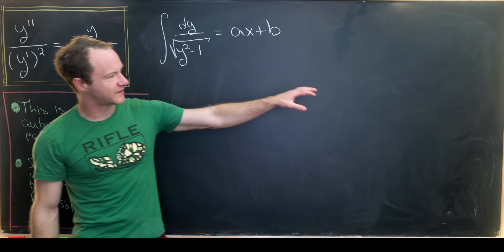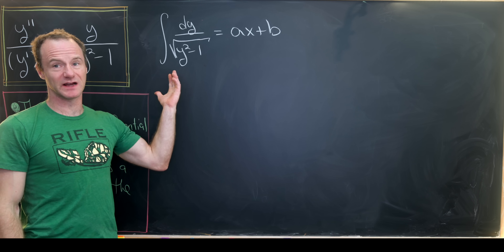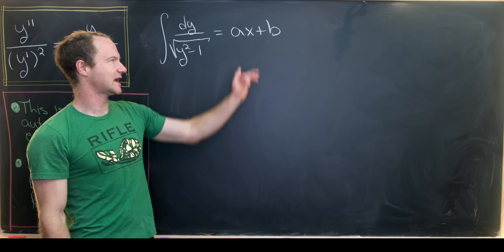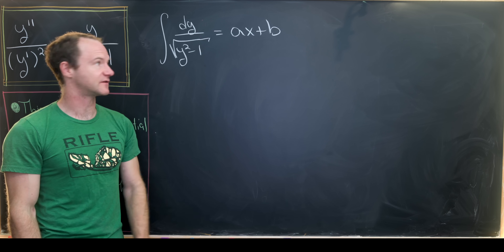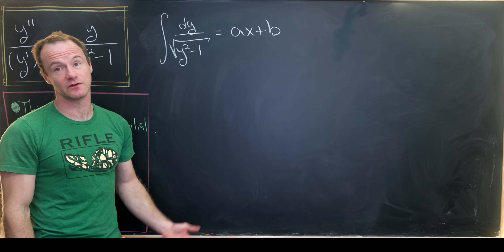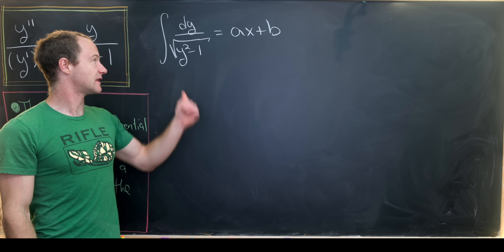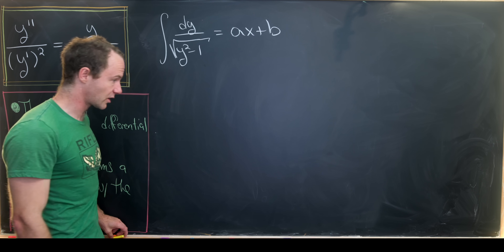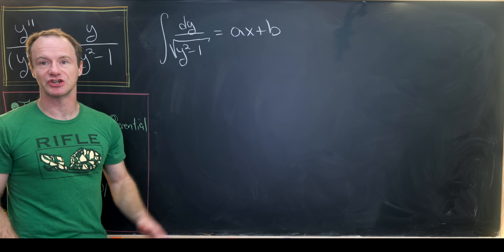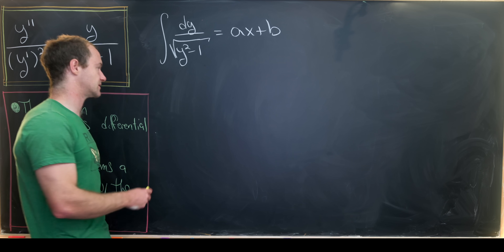I took where we finished on the last board and brought it over here, and I also took the antiderivative of both sides. The right-hand side was just a linear function, so taking the antiderivative was easy — in fact it was just ax plus a constant. The left-hand side requires a little more work, so I've symbolically anti-differentiated it and now we'll do the actual calculation.